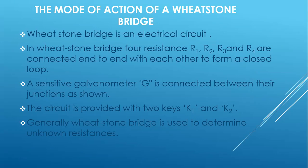The Wheatstone bridge is just an electric circuit, and in this Wheatstone bridge it has four resistors — specifically resistor one, resistor two, resistor three, and resistor four — which are connected end to end with each other to form a closed loop. You'll find a closed loop of all these four resistances, as you can see.